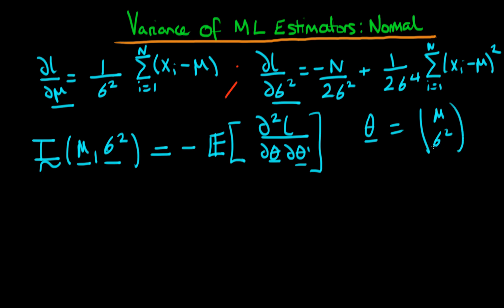So the information matrix in this circumstance is going to have four different values. In the top left it's going to have D2L over D mu squared. The bottom right is going to have D2L over D sigma squared all squared, so I'm just differentiating with respect to sigma squared twice.